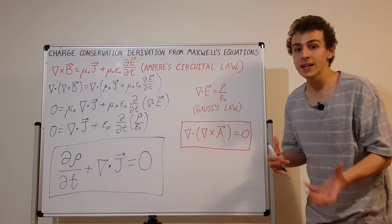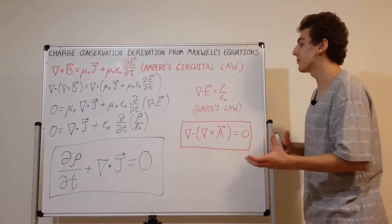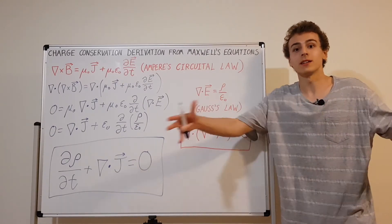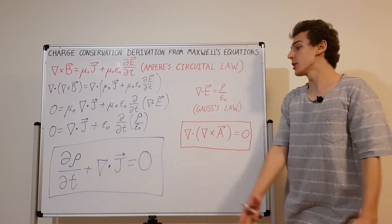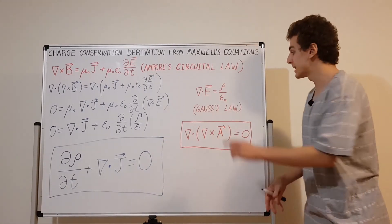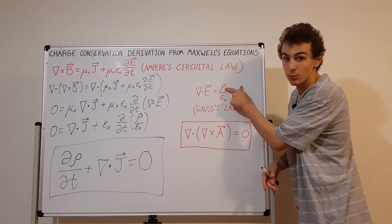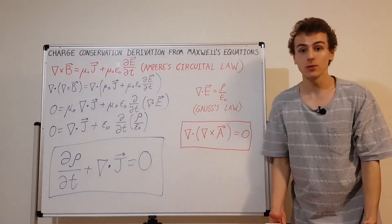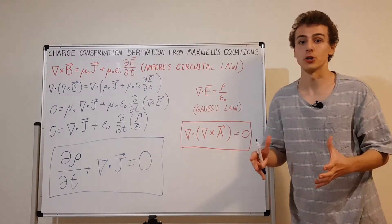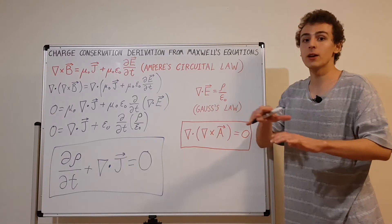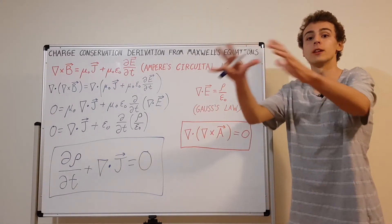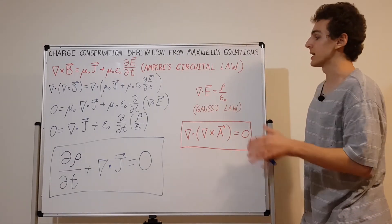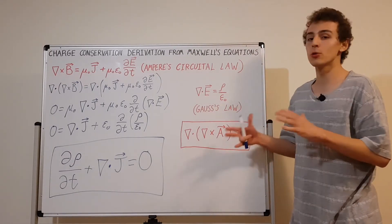There are deep analogies between different field theories. When you integrate mass density over volume, you get total mass. Similarly, rho is charge per unit volume — charge density — and if you integrate charge density over a volume, you get the total charge. Mass and charge play analogous roles in these equations.